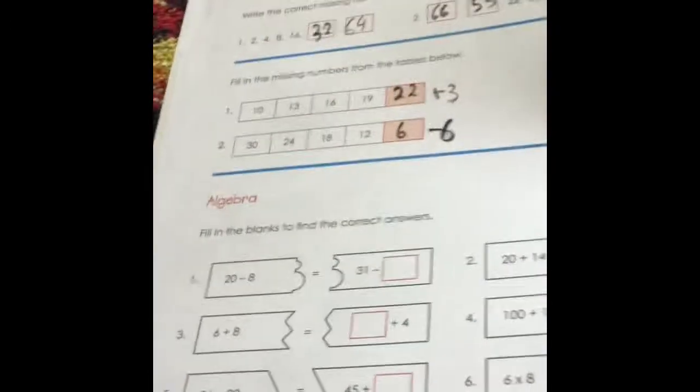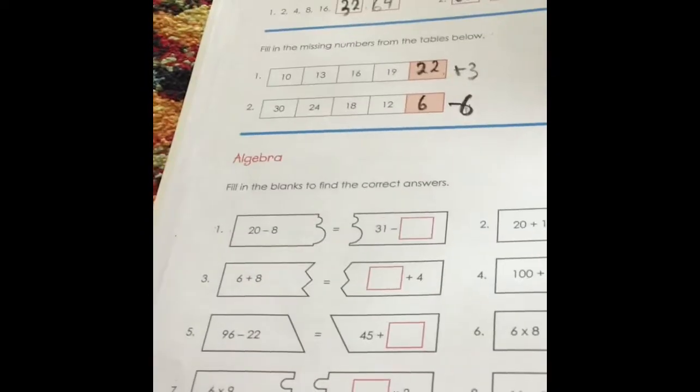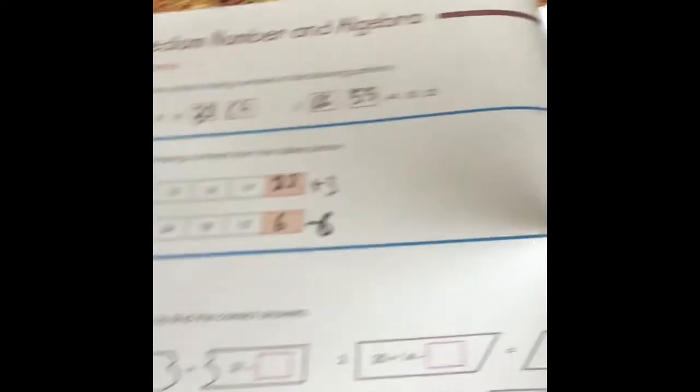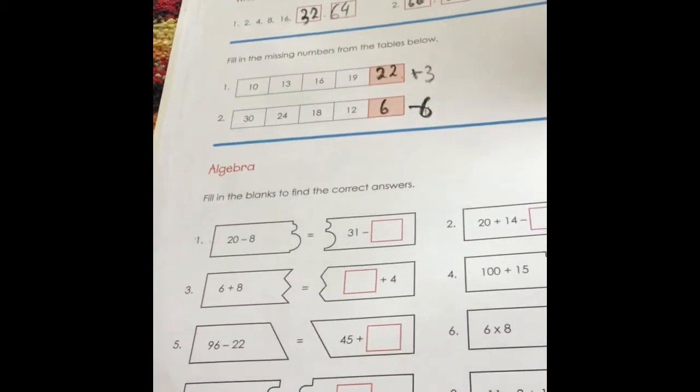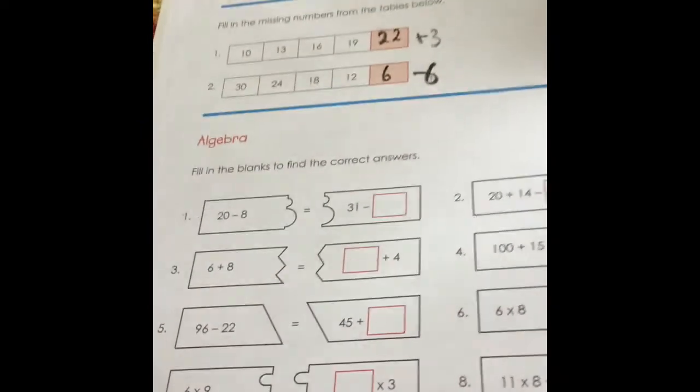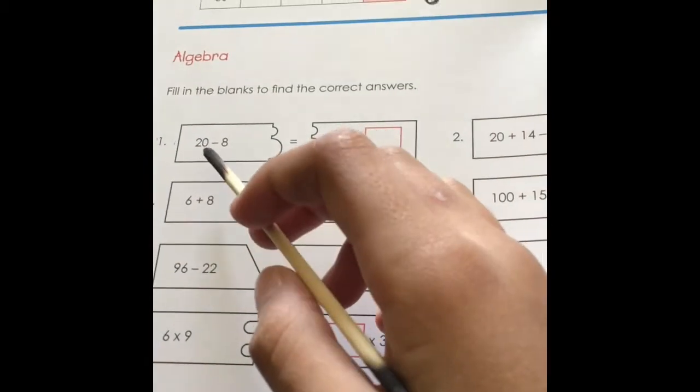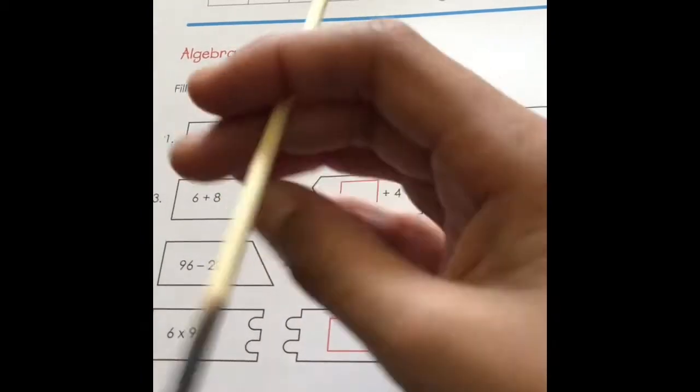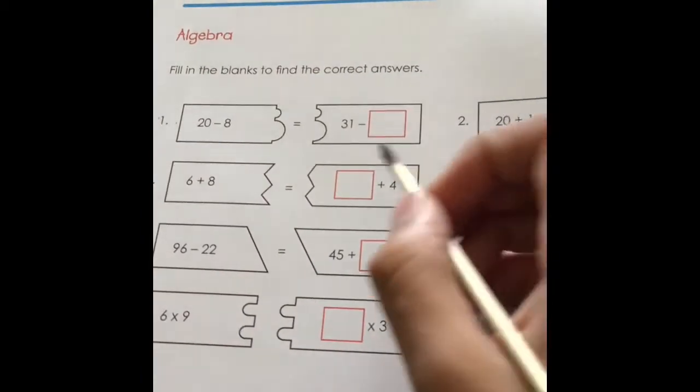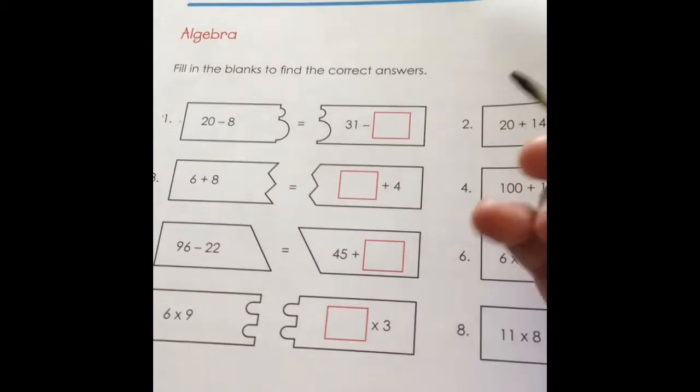The last one is algebra. Fill in the blanks to find the correct answer. So 20 take away 8 equals... let's get our pencil. 20 take away 8 equals 12. So 31 take away something should equal 12.